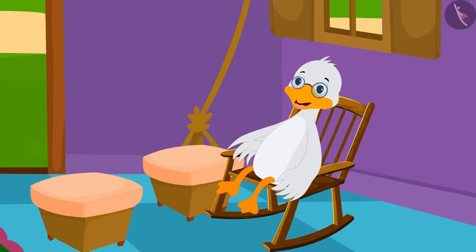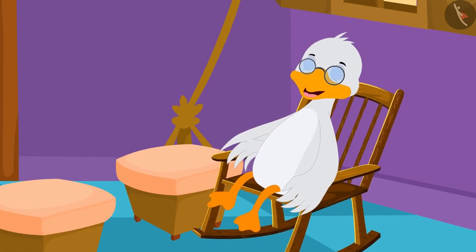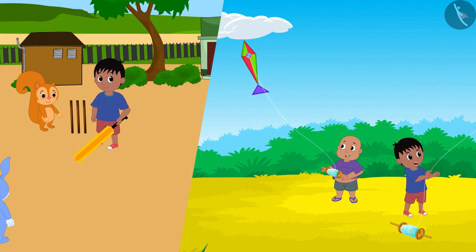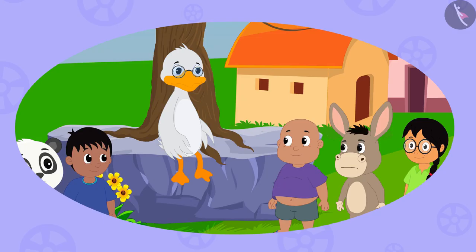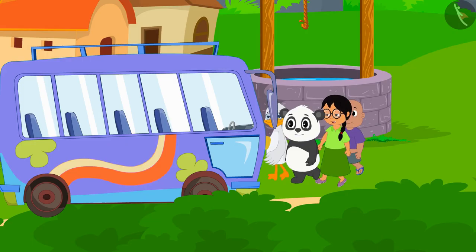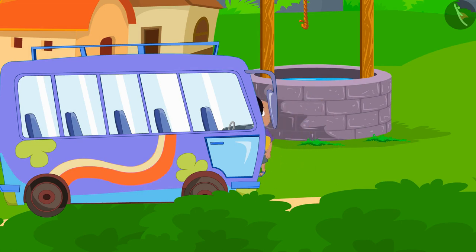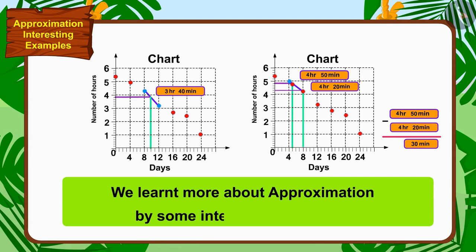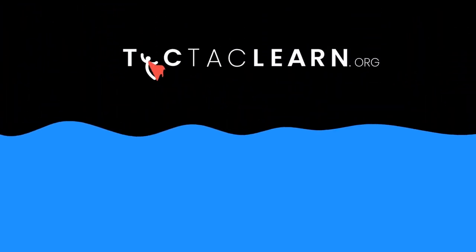Uncle is very happy that the children have now spent much less time on the phone and have started spending more time in other sports and studies. As promised to the children, uncle took the children on a trip seeing that the time spent on the phone has reduced. Children, in this video, we learnt more about approximation by some interesting examples. Thank you so much.